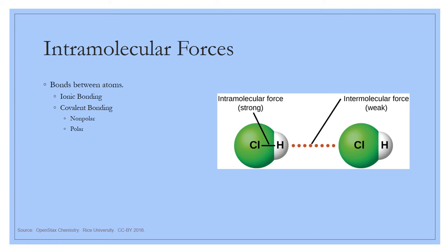Until now, we have talked primarily about intramolecular forces — 'intra,' like intrastate, deals with things occurring inside. We've been dealing with ionic and covalent bonding. Ionic bonds occur between metals and nonmetals. Covalent bonding occurs between two nonmetals or where there's a lesser difference in electronegativity — either nonpolar covalent, where electronegativity is the same, or polar covalent. These intramolecular forces are exceptionally strong — they hold atoms together and are very hard to break.